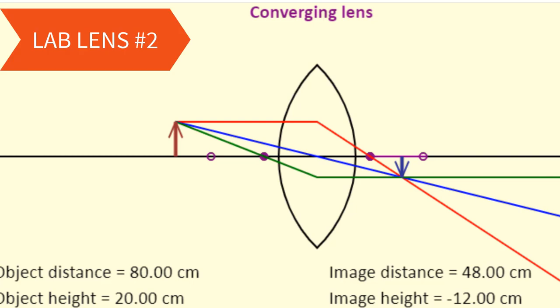Our second lens is another converging lens. But here, our object's distance is 80 centimeters away. Our object's height is 20 centimeters again. The image's distance is 48 centimeters away. The image's height is negative 12 centimeters. Again, it's an inverted real image. But this time, it's a little bit smaller. And so this is lab lens number two. What's the focal length?